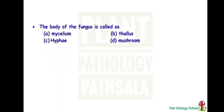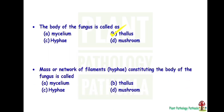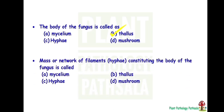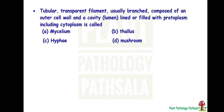First question: the body of fungus is called as? Answer is B — Thallus. Then, mass or network of filaments constituting the body of fungus is called as? Answer is A — Mycelium. Then, tubular transparent filament, usually branched, composed of an outer wall and a cavity lined with protoplasm including cytoplasm, is called as? Answer is C — Hyphae. So the hyphae constitute mycelium, and mycelium constitutes the thallus, that is the whole body of the fungus.